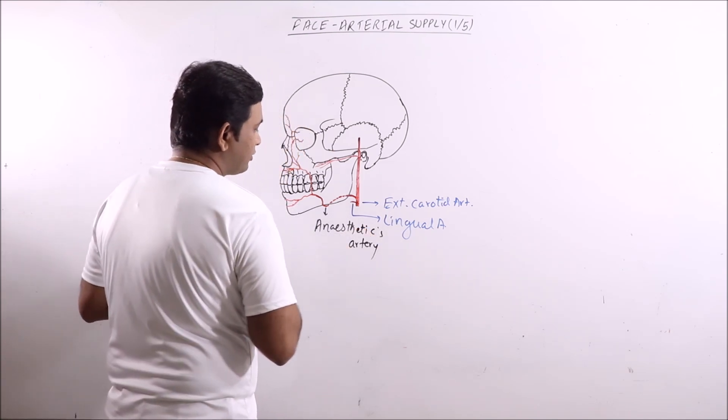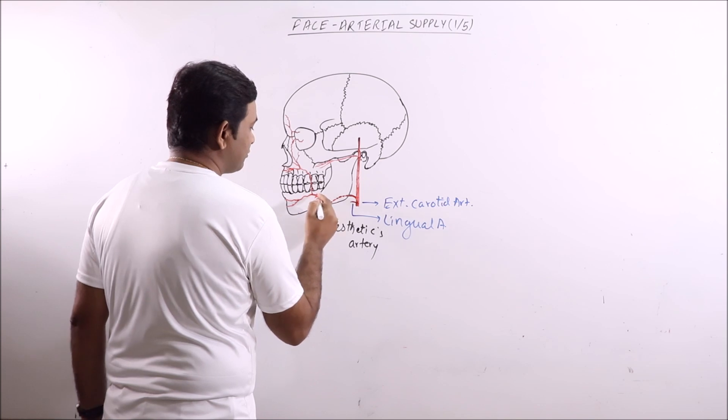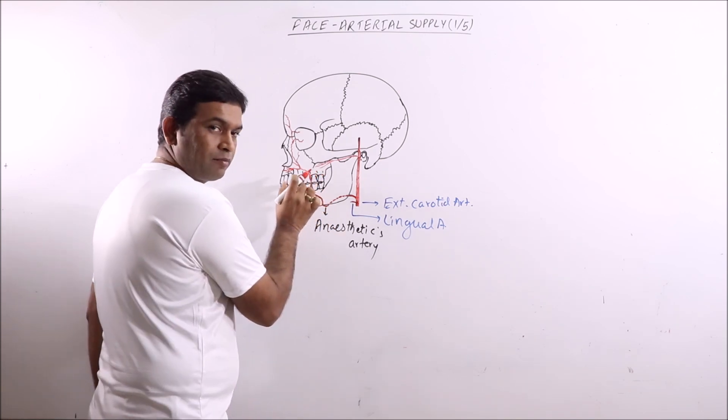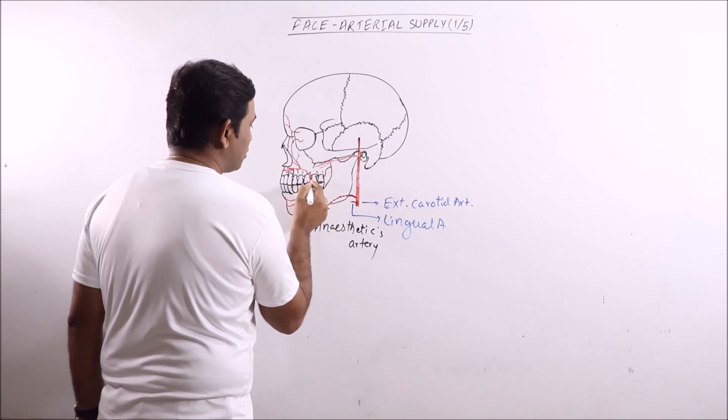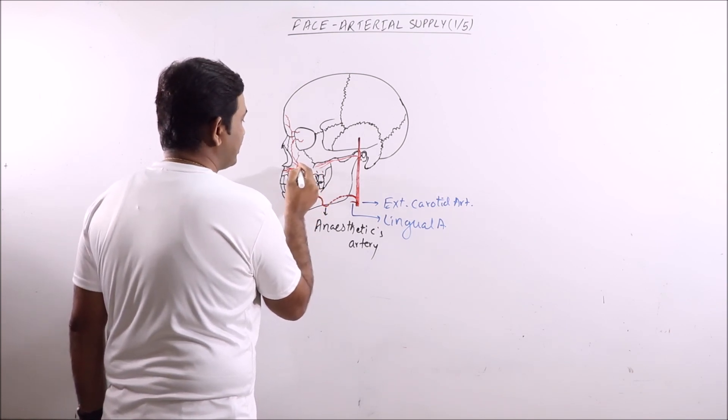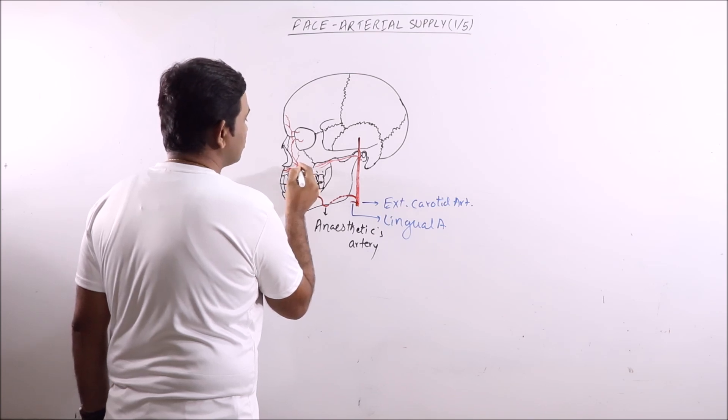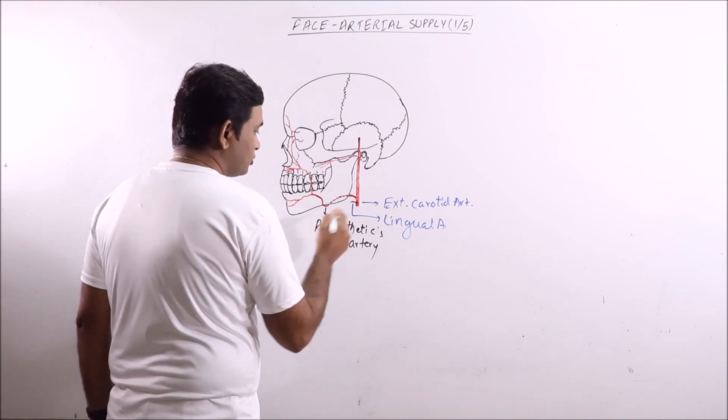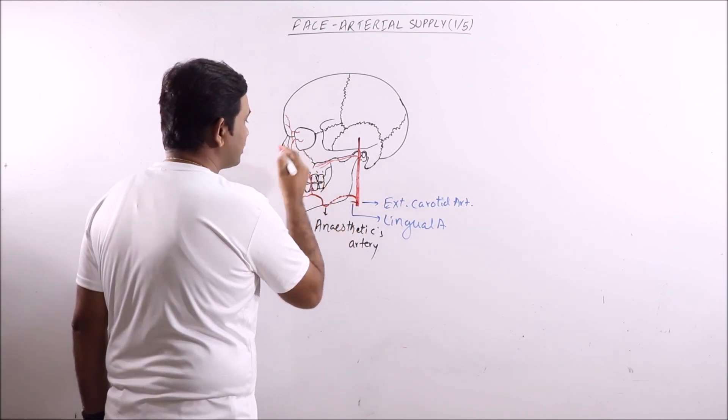Then it runs upwards and anteriorly, just 1.25 cm behind the corner of the mouth. And then reaches lateral to the nasal cavity or lateral to the nose. Then it reaches upwards and ends as the angular artery. So this is the facial artery.